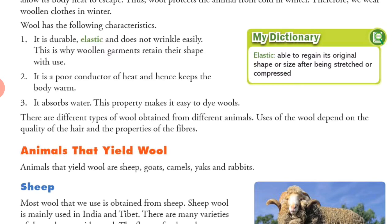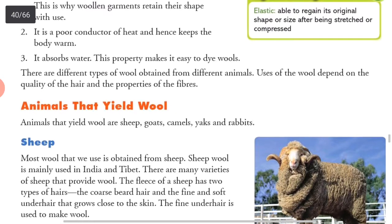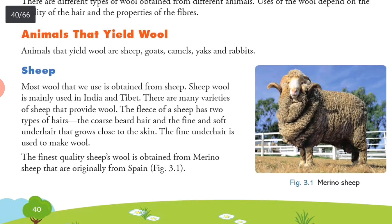Coloring can be done easily on wool. Different types of wool are obtained from different animals, and the use of wool depends upon the quality of hair and the property of the fibers. Animals that yield wool — you can see in the pic — merino wool. Merino sheep is shown over there in the pic.